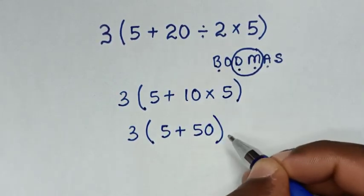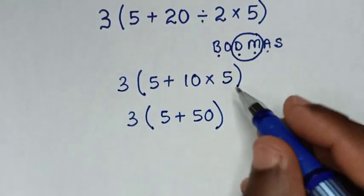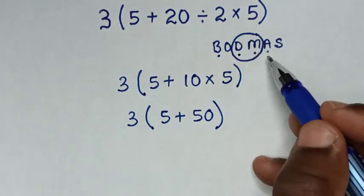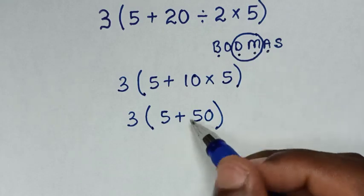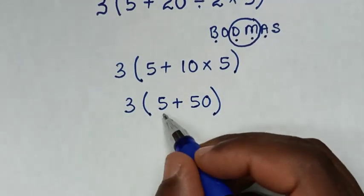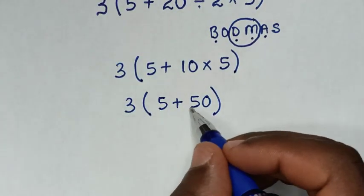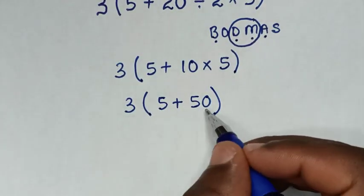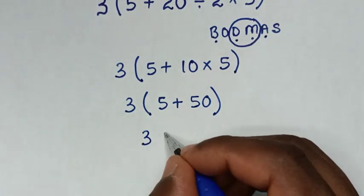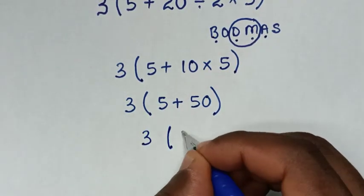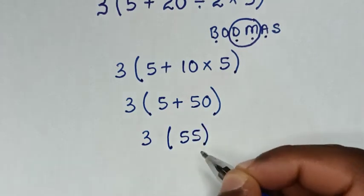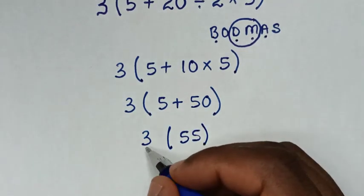After division and multiplication, we handle the addition inside the bracket. 5 plus 50 equals 55. So the expression becomes: 3 bracket 55 bracket.